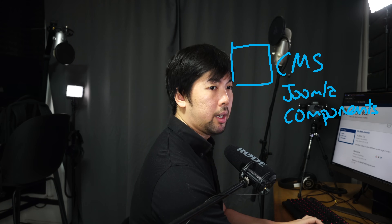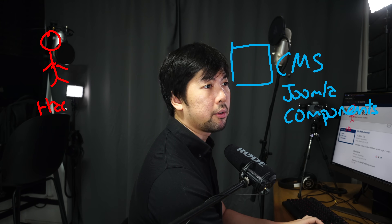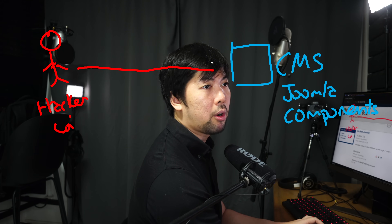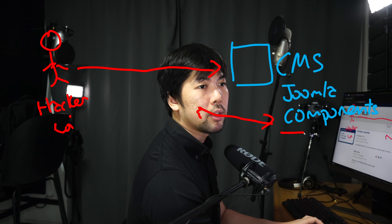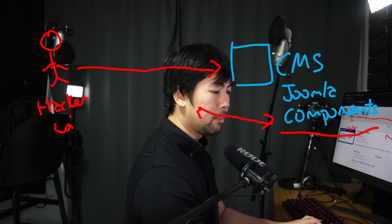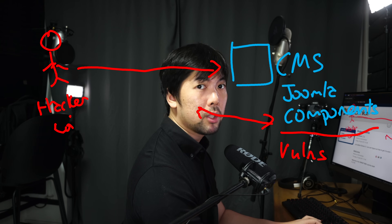First of all, we have a website running a Joomla content management system. What we are looking out for is what we call components. What a hacker would do is go into the site looking for all the different components that are available, list them down, and look for the different vulnerabilities associated with those components, and then exploit the vulnerability.